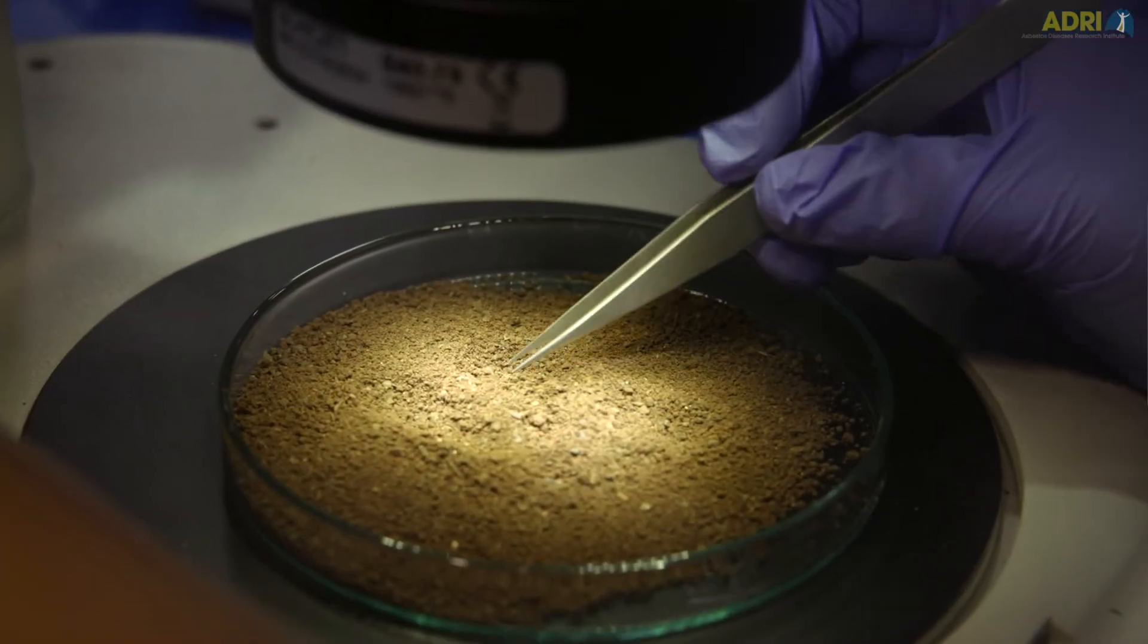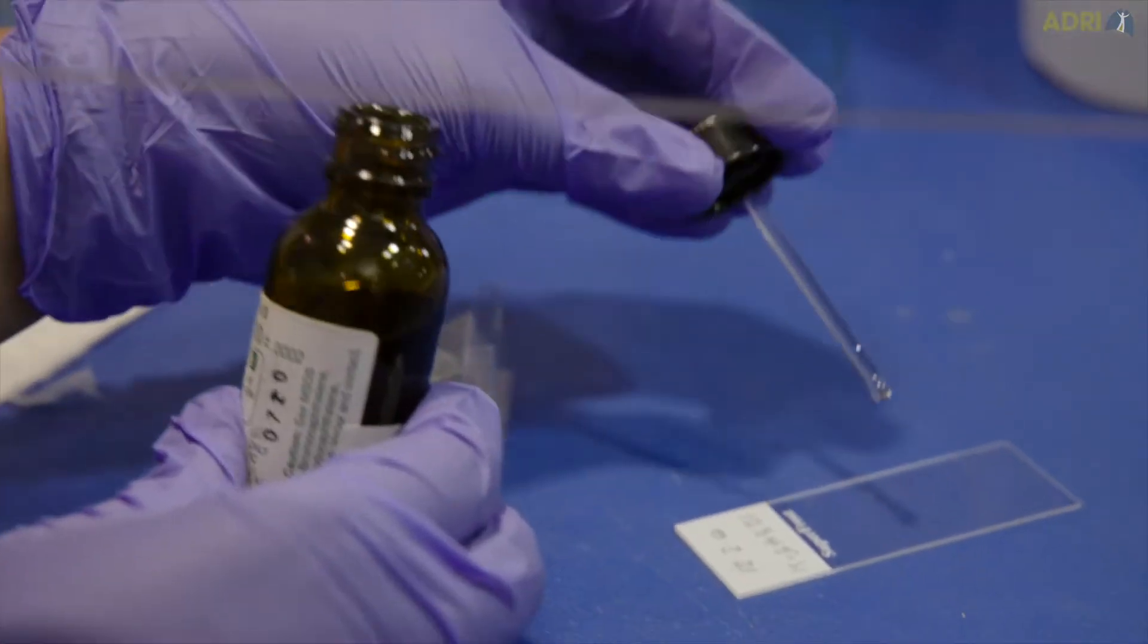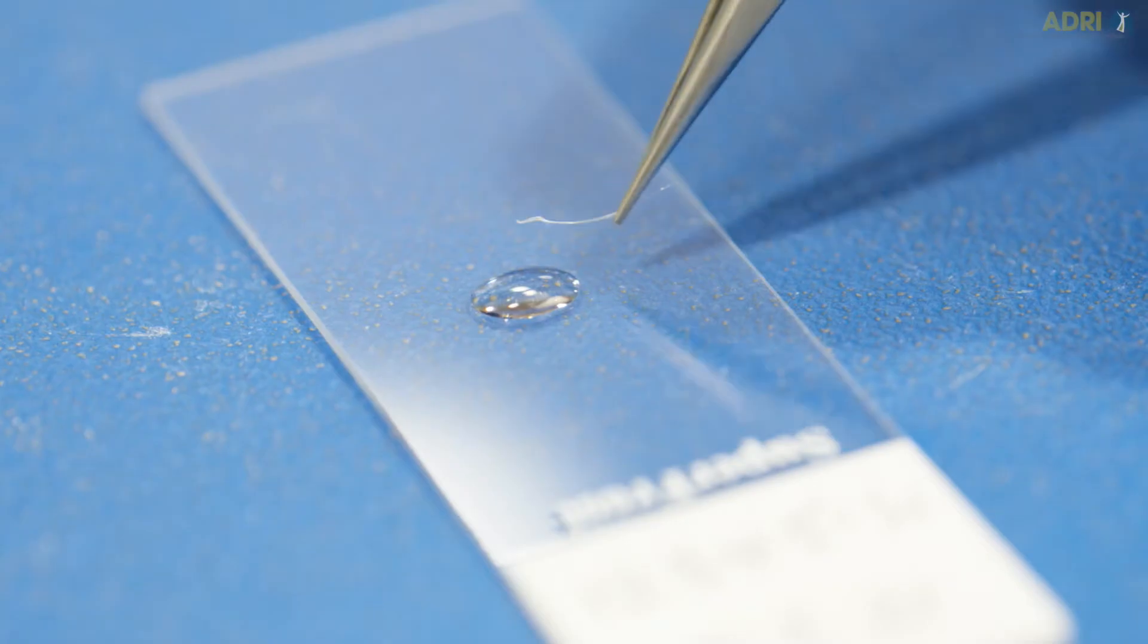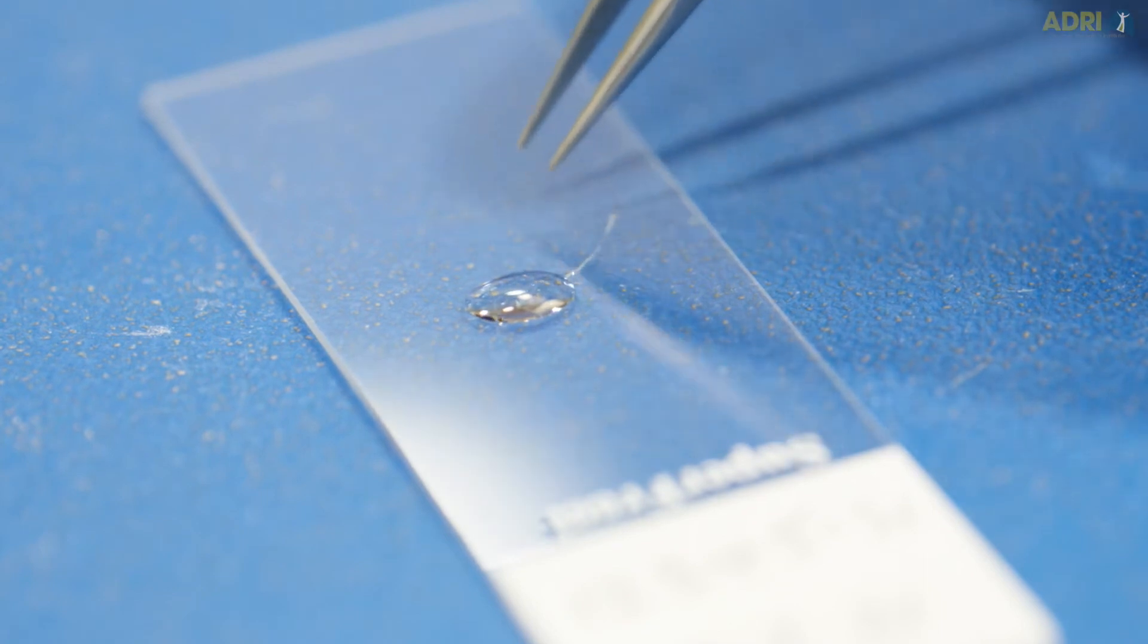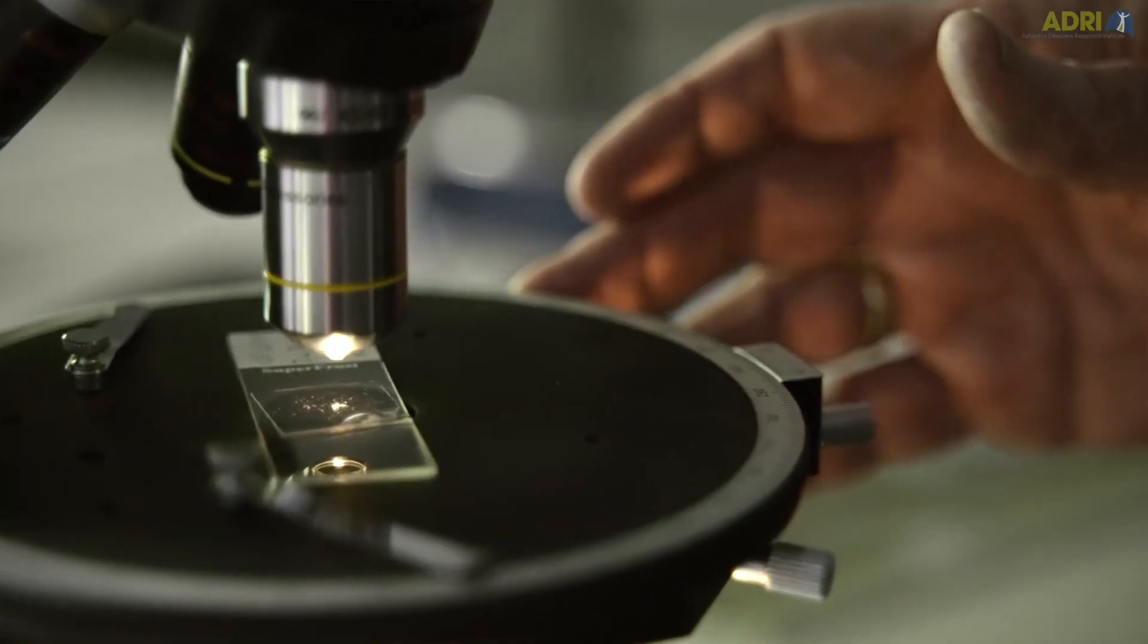Once we've looked at the fibre and we've got an idea of what it is then we'll put it into a refractive index oil. We then take the fibre with the forceps and put the fibre onto the slide and then we take it over to the polarised light microscope and we go through a series of tests there.